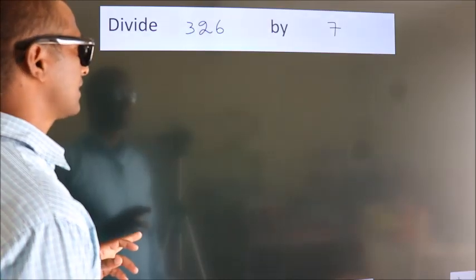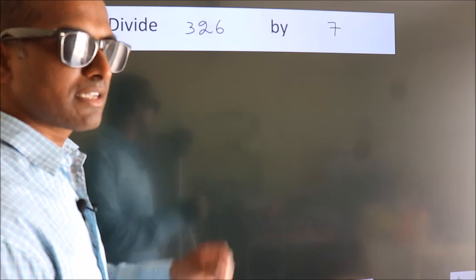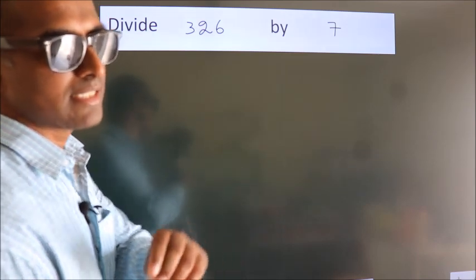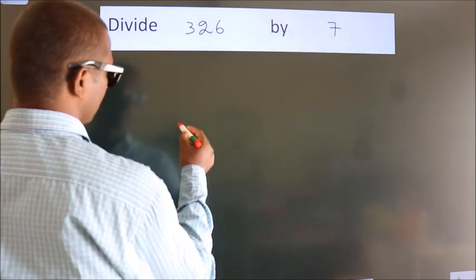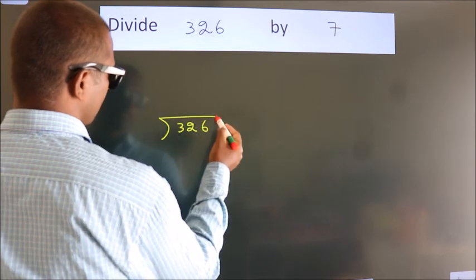Divide 326 by 7. To do this division, we should frame it in this way. 326 here, 7 here.